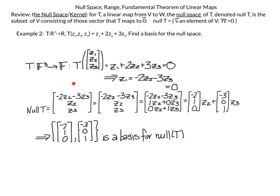The null space looks like (−2Z2 − 3Z3, Z2, Z3). Breaking this down as a linear combination of Z2 and Z3: the first coordinate is −2Z2 − 3Z3, the second is 1·Z2 + 0·Z3, and the third is 0·Z2 + 1·Z3. This gives us the vectors (−2, 1, 0)·Z2 and (−3, 0, 1)·Z3. Since these two vectors are linearly independent, they form a basis for null(T).